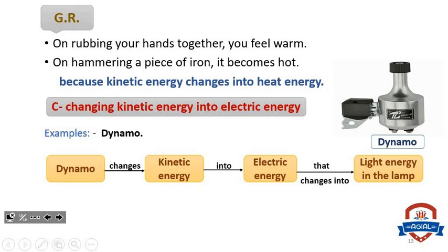Number three: changing kinetic energy into electric energy. For example, the dynamo. It changes kinetic energy into electric energy, which then changes into light energy in the lamp.